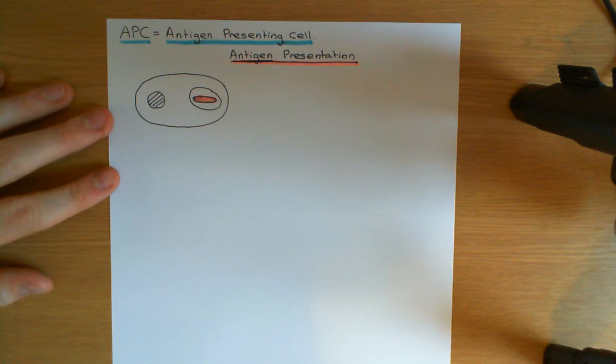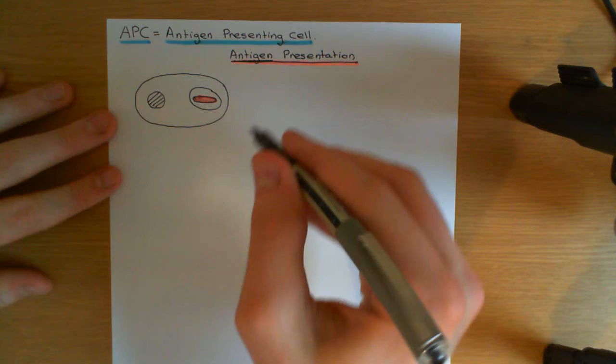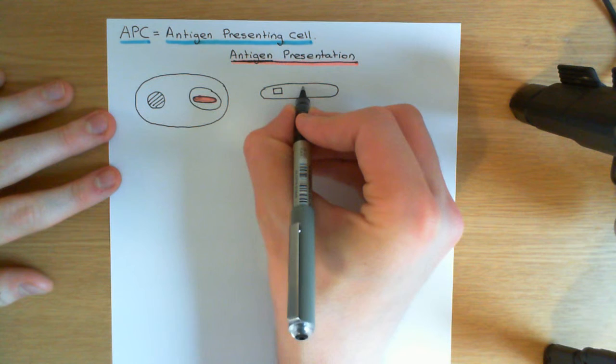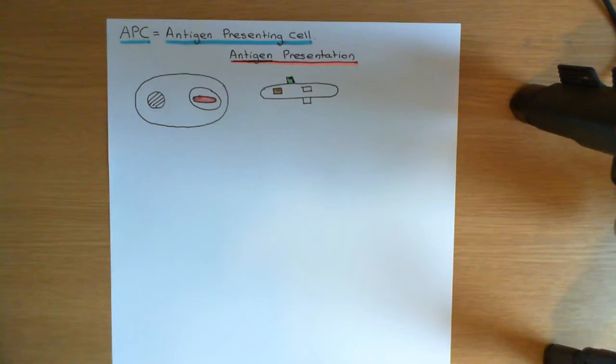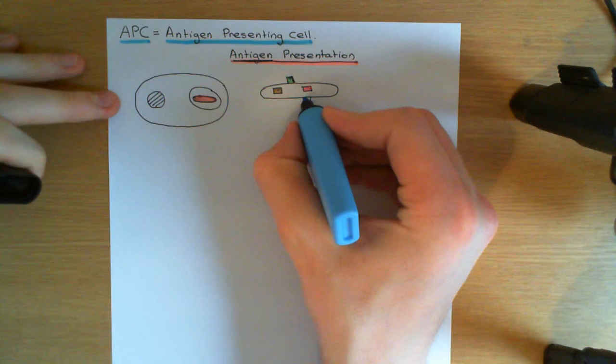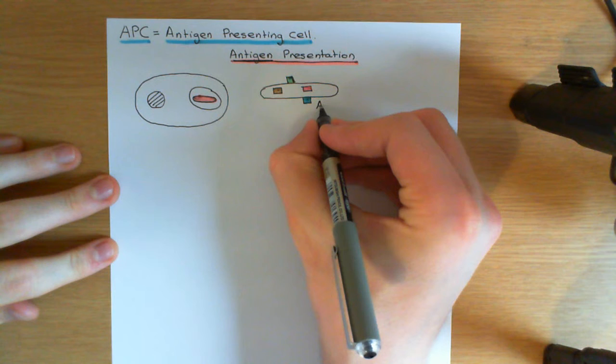So the adaptive immune response is going to be directed against the antigens of mycobacterium tuberculosis. A mycobacterium tuberculosis cell could have all sorts of different proteins — we could launch adaptive immune responses against all of these different proteins, and therefore they're all referred to as the mycobacterium tuberculosis antigens.